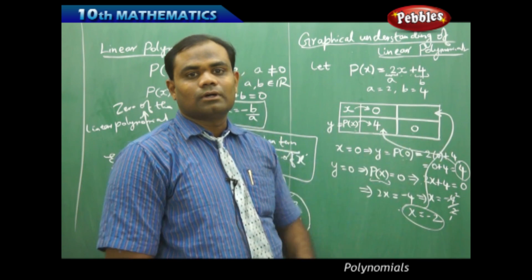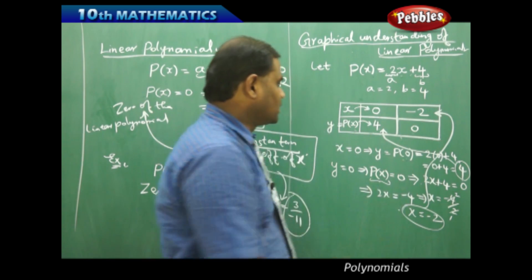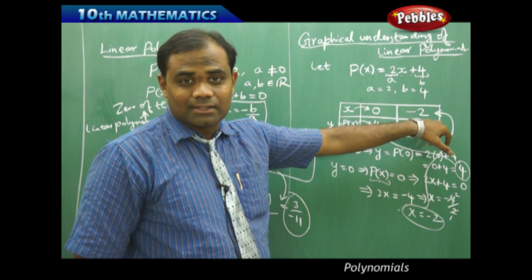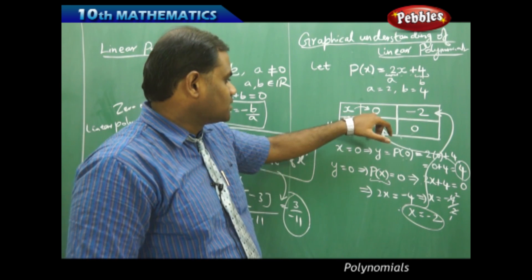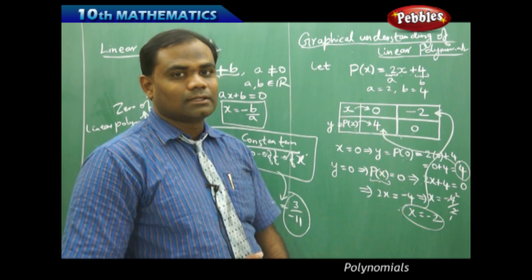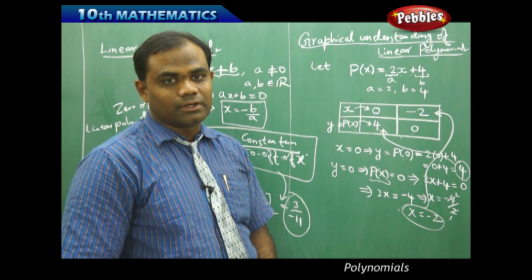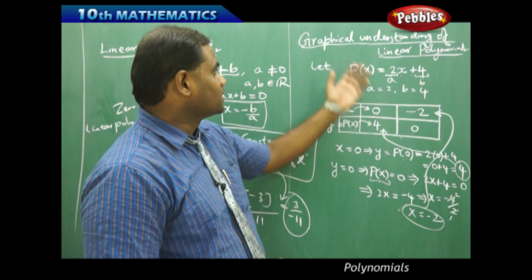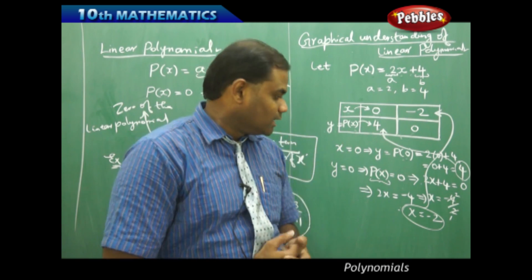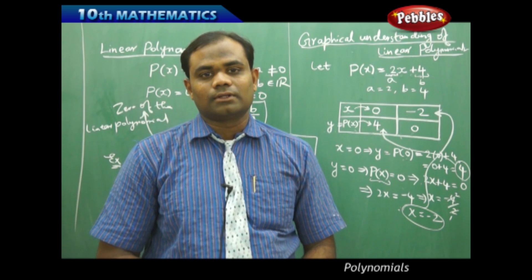So x equals minus 2 fills in this column, meaning when y is 0, the corresponding x is minus 2. And when x is 0, the corresponding y is 4. These are the coordinates. Now I want to convert this into the real x-y coordinate system to understand the linear polynomial graphically.